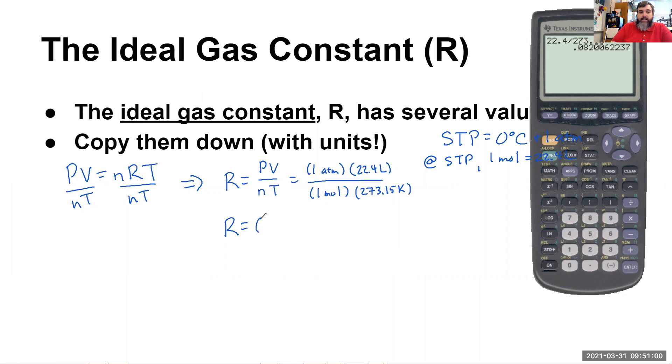And so R has a very complex value. It is 0.08201 usually is how it's represented. Some places do go 0.6 instead. Liter atmospheres over mole kelvins. That's how we found R. That's how R is found.